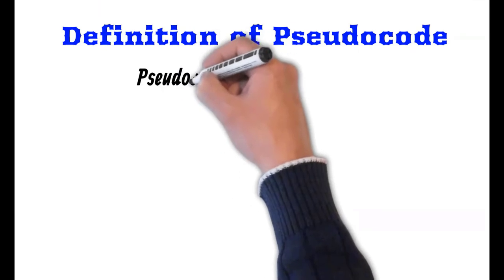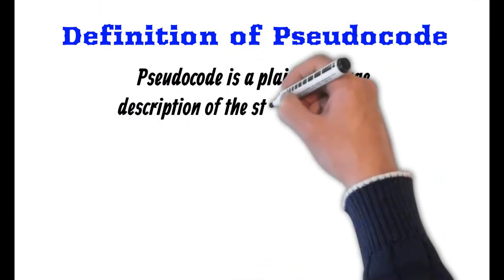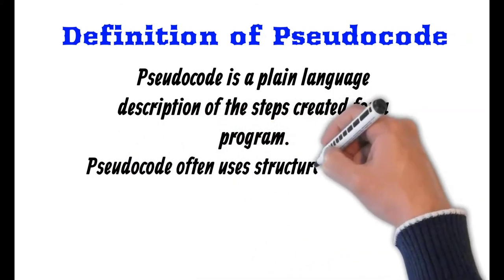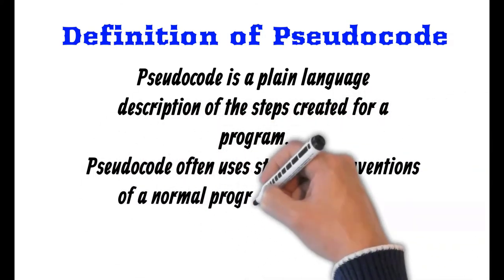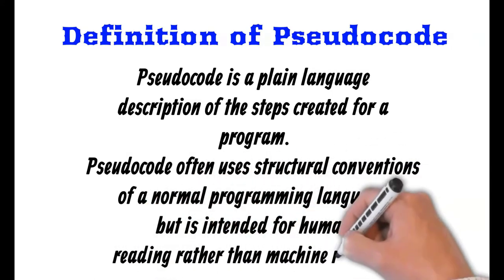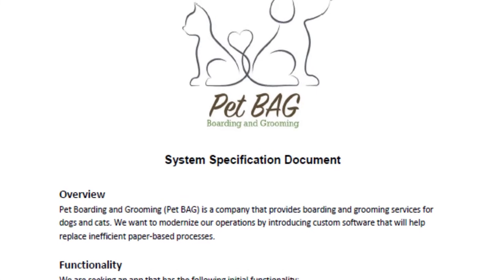Now we're going to discuss pseudocode. Pseudocode is a plain language description of the steps created for a program. Pseudocode often uses structural conventions of a normal programming language, but is intended for human reading rather than machine learning.